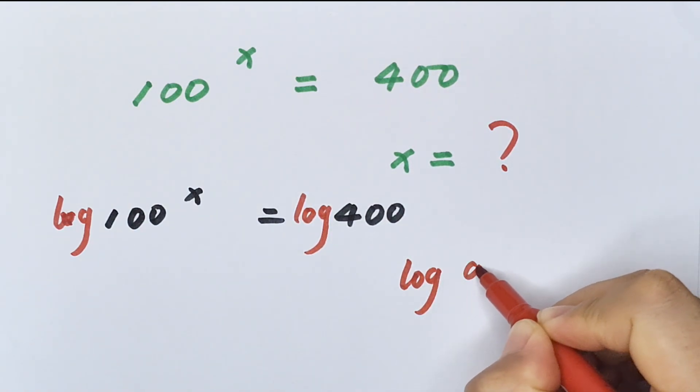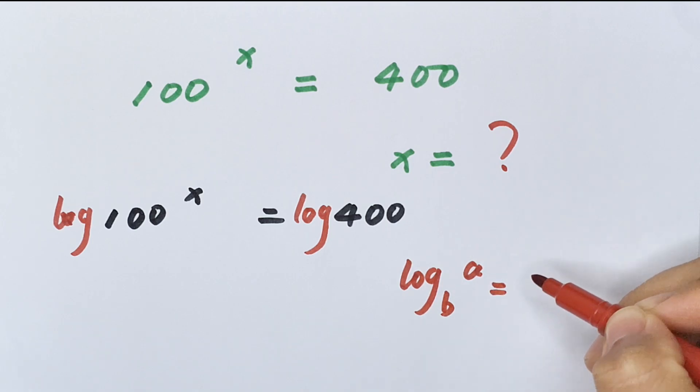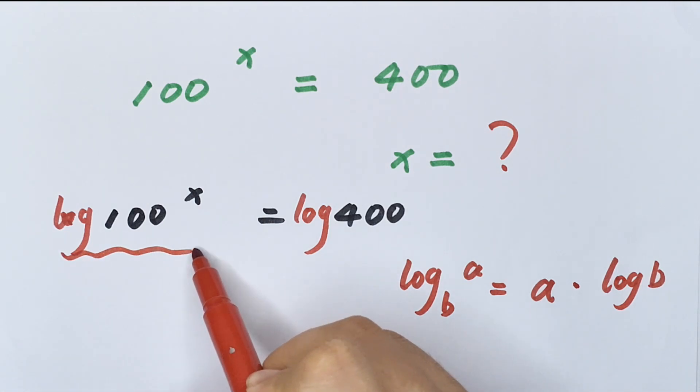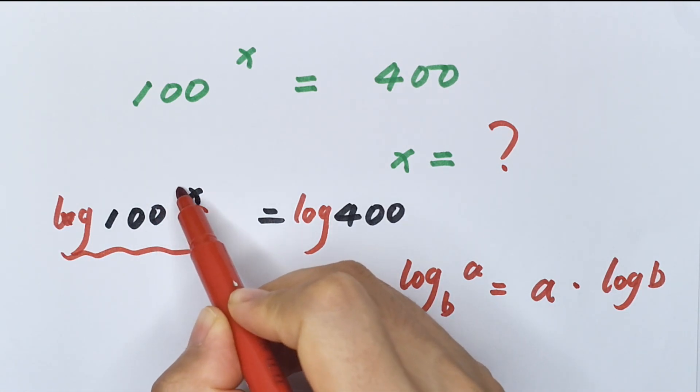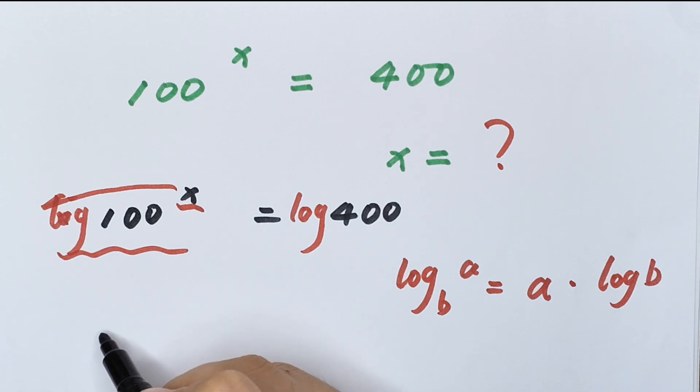So here we move it to the front, so x times log(100) equals log(400).